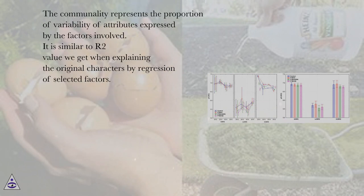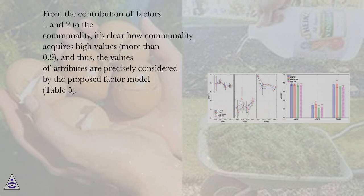The commonality represents the proportion of variability of attributes expressed by the factors involved. It is similar to R² value we get when explaining the original characters by regression of selected factors. From the contribution of factors 1 and 2 to the commonality, it's clear how commonality acquires high values (more than 0.9), and thus the values of attributes are precisely considered by the proposed factor model (Table 5).